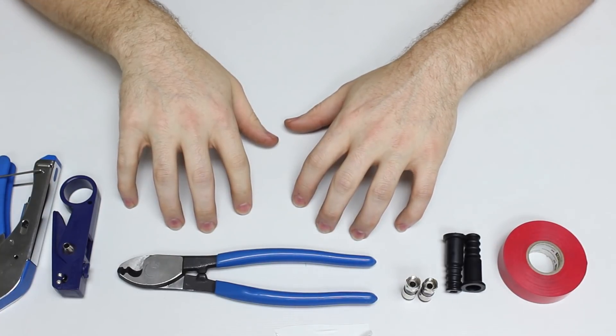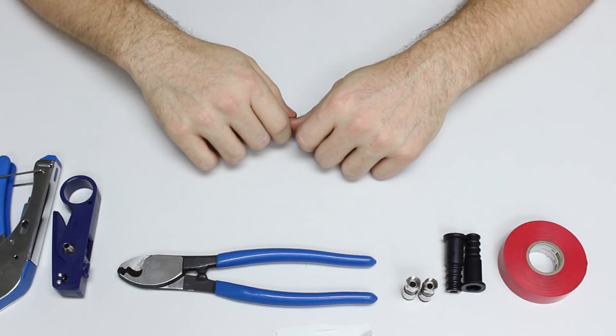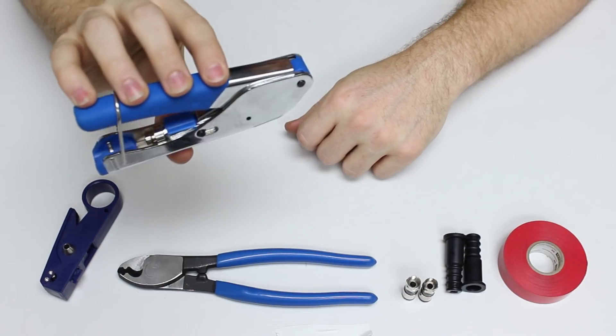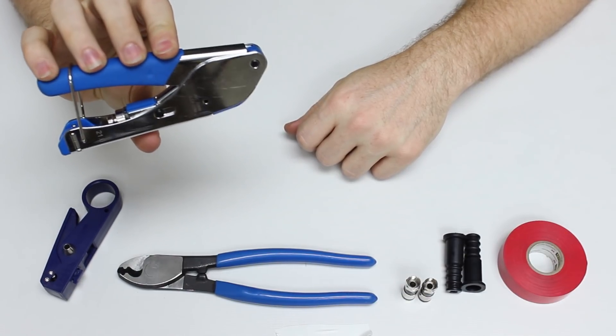First step is we're going to go over the tools needed to do the job here. You're going to need a basic issue crimper.